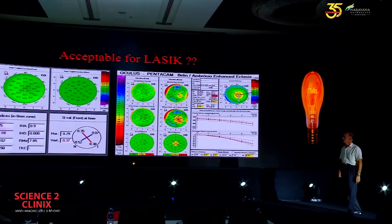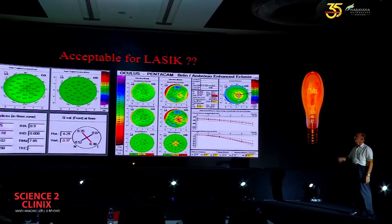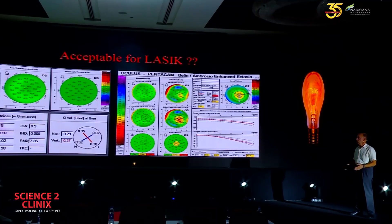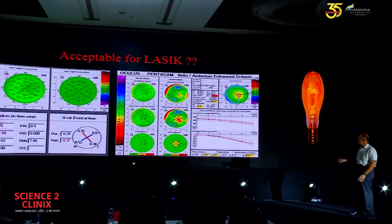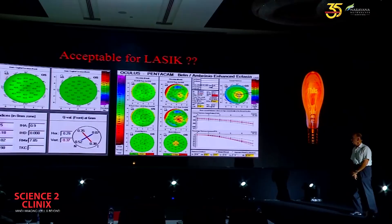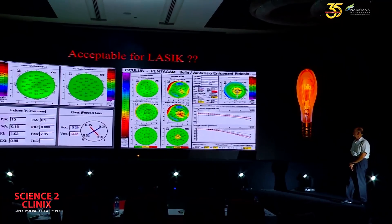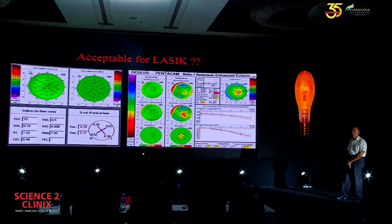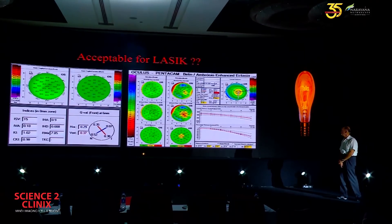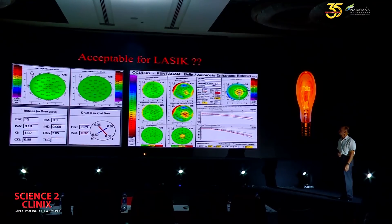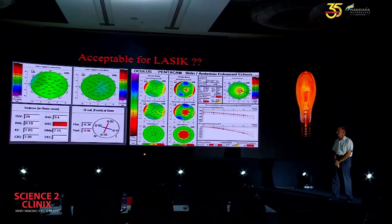Let's go back to that first example. On the left: normal curvature, every single topographic index is normal. But look at the display on the right — a fairly abnormal map, a posterior ectasia, and an abnormal pachymetric progression. Yet again, the anterior indices are all completely normal.